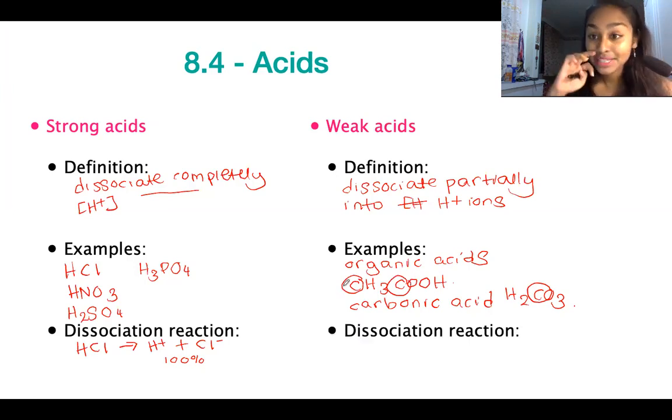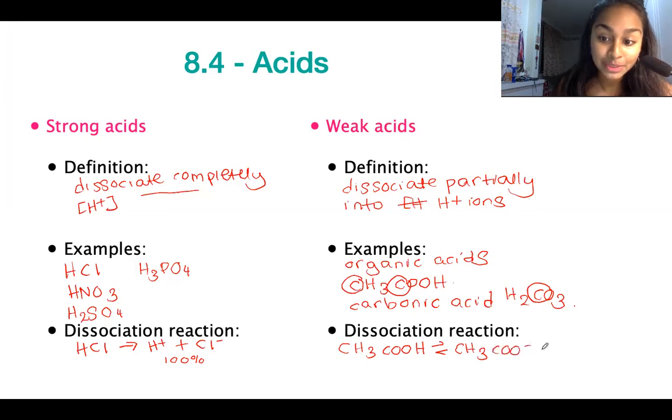If we look now at the dissociation reaction, for example for ethanoic acid, we have CH3COOH and now I'm going to have equilibrium arrows. The reason I'm going to have equilibrium arrows rather than a direct arrow is because there's still going to be a backward reaction because there hasn't been complete dissociation. So it's going to go backwards and forwards. Most of the acid is actually undissociated and quite a small amount has actually dissociated. That's the main distinction between a strong acid and a weak acid.